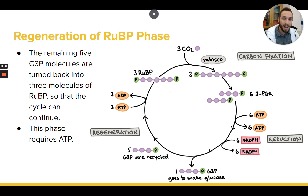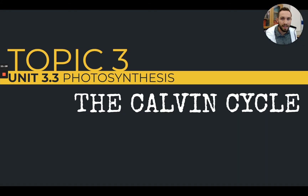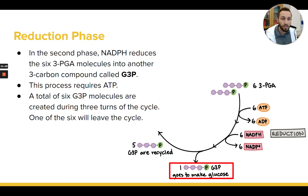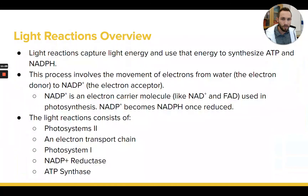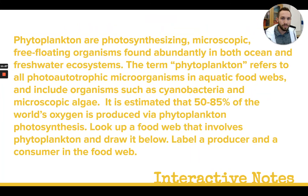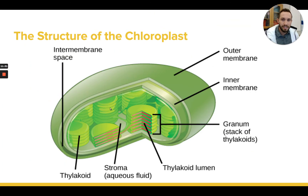This whole series of reactions — the Calvin cycle — takes place in the stroma of the chloroplast, outside the thylakoid. Going back to the picture of the chloroplast from topic one, the Calvin cycle is taking place outside the thylakoids in the chloroplast, in the space called the stroma.